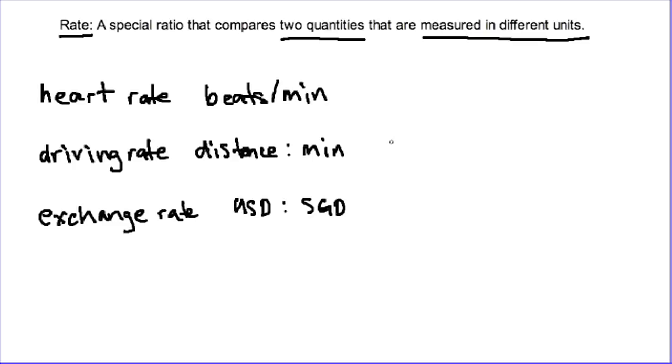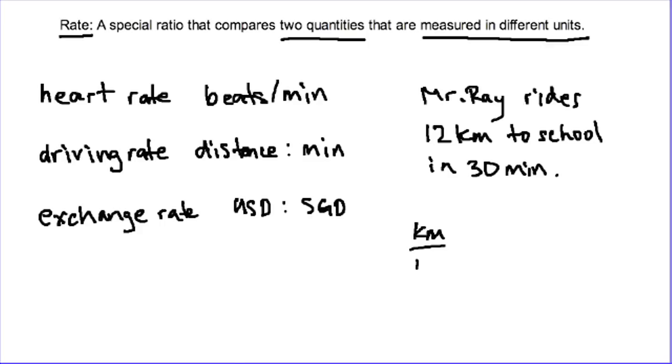So let's actually just practice writing a rate. Let's say Mr. Ray rides 12 kilometers to school in 30 minutes. Just based on this information, we can actually write a rate. The rate that we will write this time is a rate that compares kilometers to minutes. So my rate is going to be 12 kilometers compared to 30 minutes.